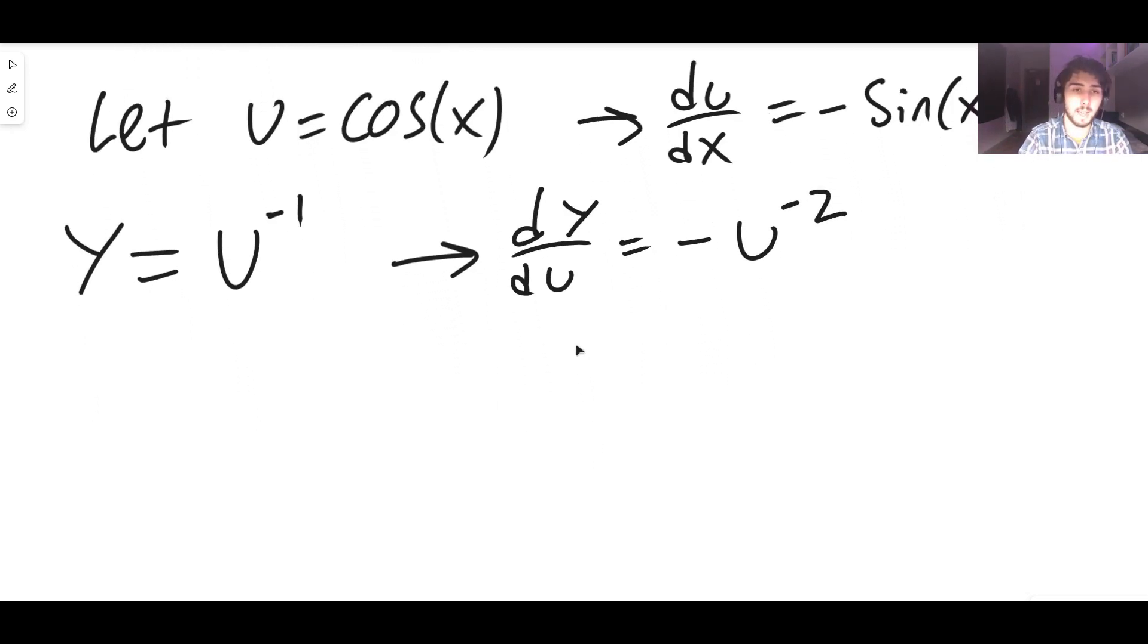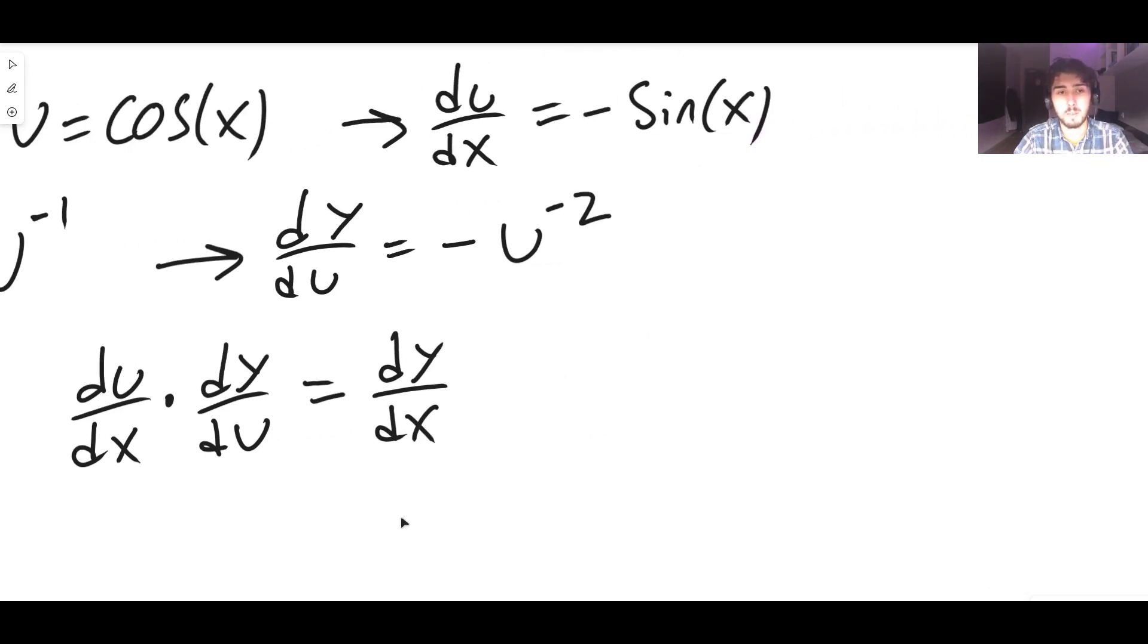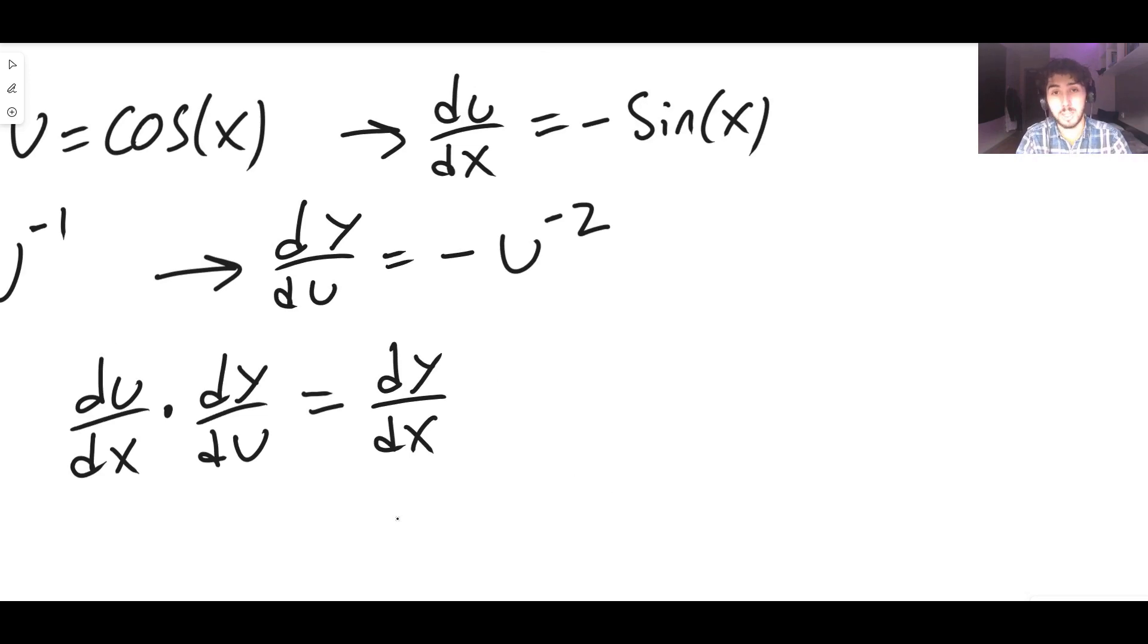Okay and as always in classic chain rule fashion we're going to multiply du/dx and dy/du together. The reason for this is because notice the du's cancel out and you end up with just getting dy/dx which is what we're looking for. So du/dx is minus sin x and dy/du is minus u to the minus two.